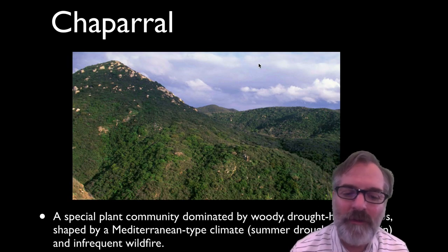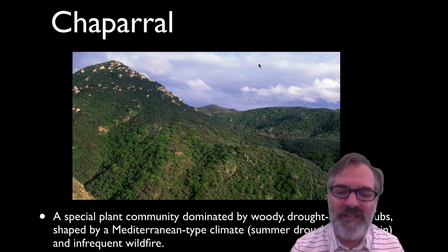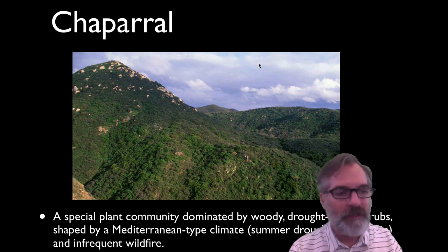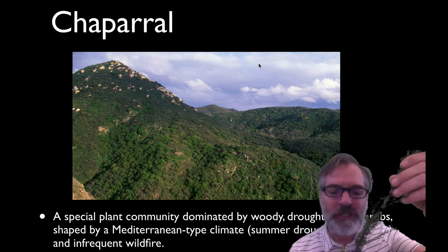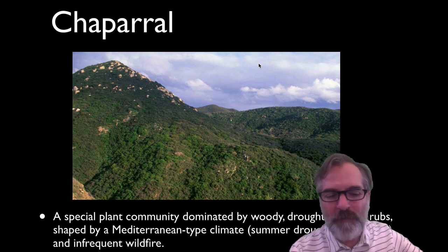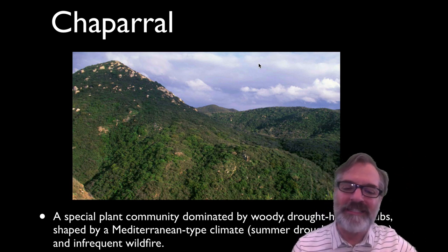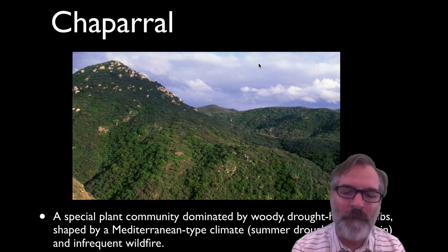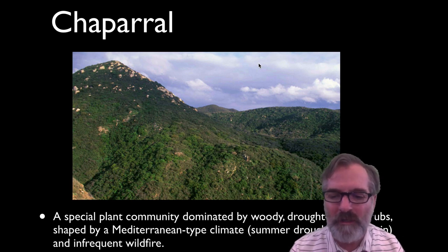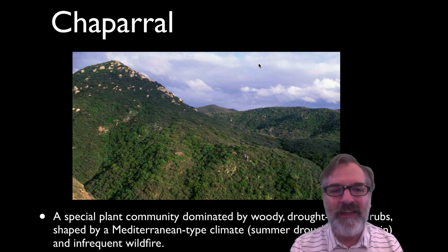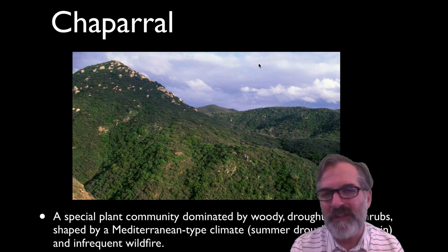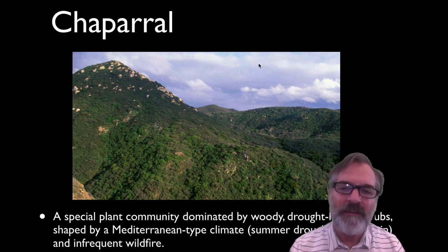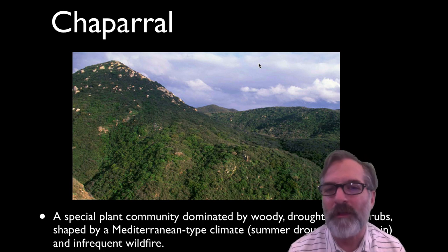Chaparral is a plant community dominated by woody, drought-hardy shrubs. It's shaped by a Mediterranean-type climate, which basically means very little water in the summer with drought conditions, and then in the fall and winter there's not much rain, a lot of heat, and infrequent wildfires.